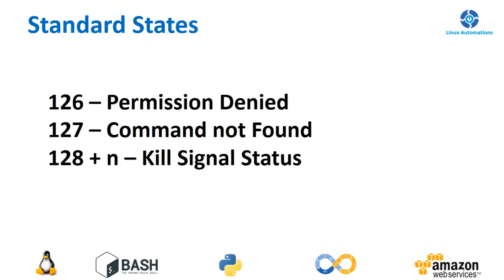Let's talk about some standard values. It is always recommended for users not to use values more than 125, so use values from 0 to 125, whereas the remaining values are widely used by the system. For example, 126 means permission denied. If you try to execute a file that does not have executable permission, you get a permission denied error, and in that case we usually see 126 as the exit status.